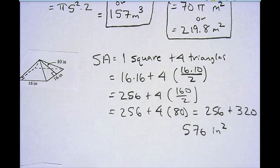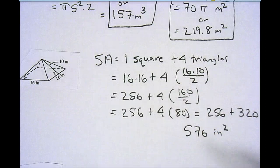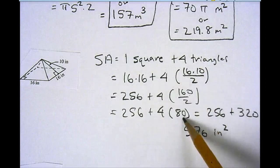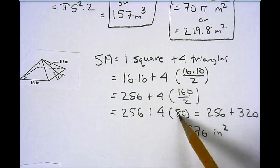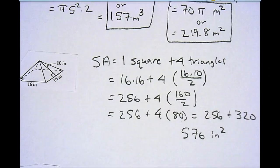I have one square plus four triangles. The area of the square is 16 times 16. The triangles are 4 times 10 times 16 divided by 2. I did 10 times 16, which is 160 divided by 2, which is the same as 80. So I have 4 times 80, which is 320. If I add that to 256, I get 576 inches squared. And that's how I find the surface area of a pyramid.